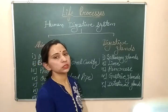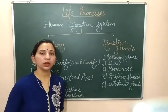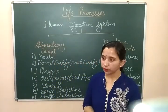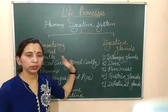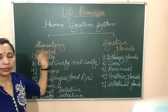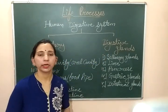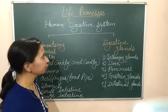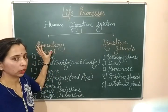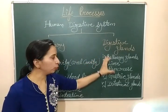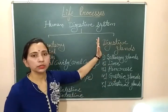Before starting the nutrition process in human beings, we need to understand the system known as the digestive system, which helps in the digestion process. The human digestive system can be divided into two parts: a long tube-like structure called the alimentary canal, and glands that also help in the digestion process, known as accessory glands or digestive glands.